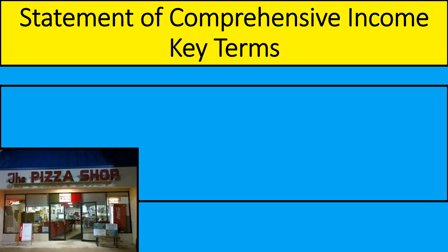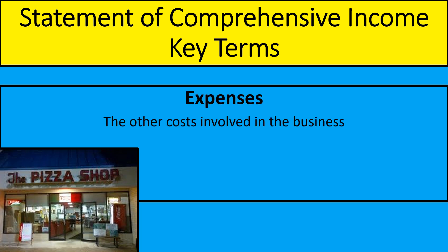We've looked at the cost of making the pizzas and now we're going to look at the other costs involved in having the pizzas to make. These are called expenses — the other costs involved in the business. So in my pizza shop, I'm looking at things like rent, wages, advertising and insurance. Lots of other costs that a business will have but aren't directly related to making the pizzas. We've called them fixed costs before when we've done breakeven.